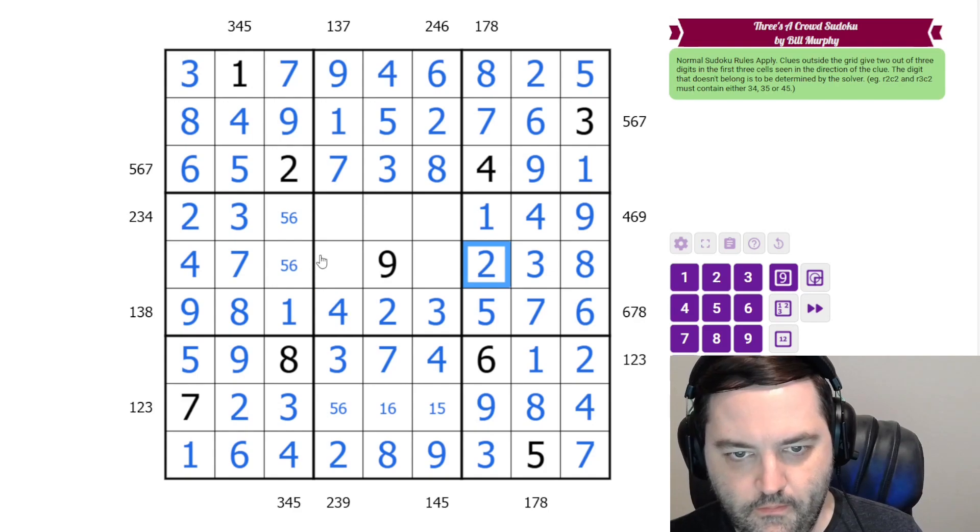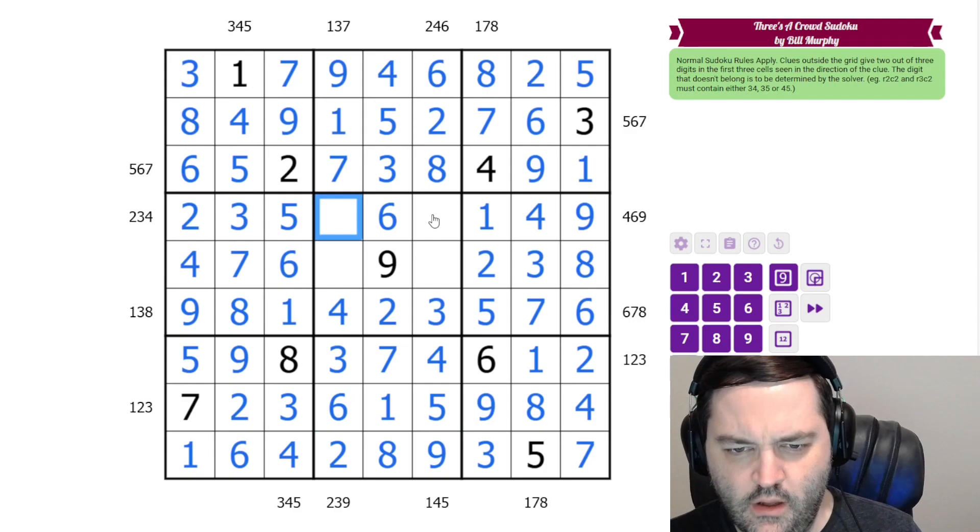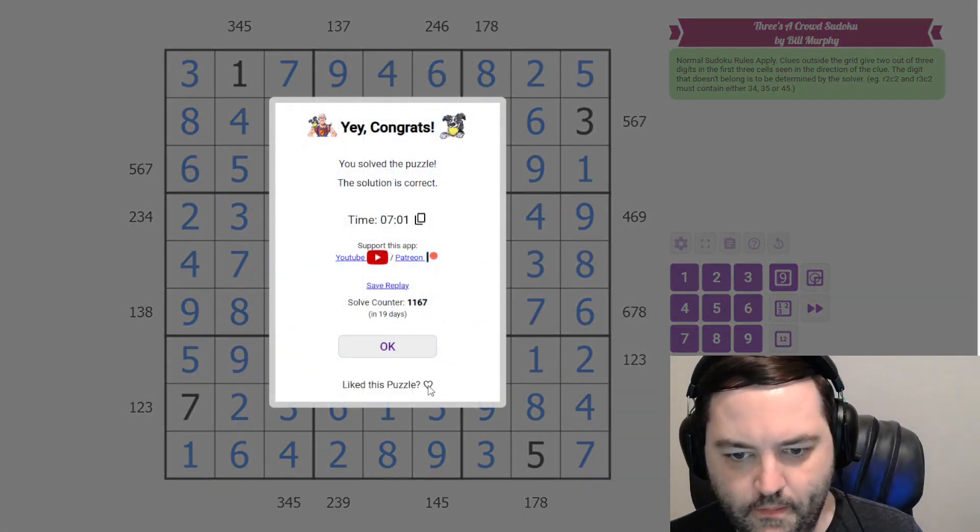That's one and two. This is one or six, and it can't be one. So that gives us five and six. That gives us the one, five, and six down here. And then to finish off, we need eight and seven, and we need five and one. That's the solution.